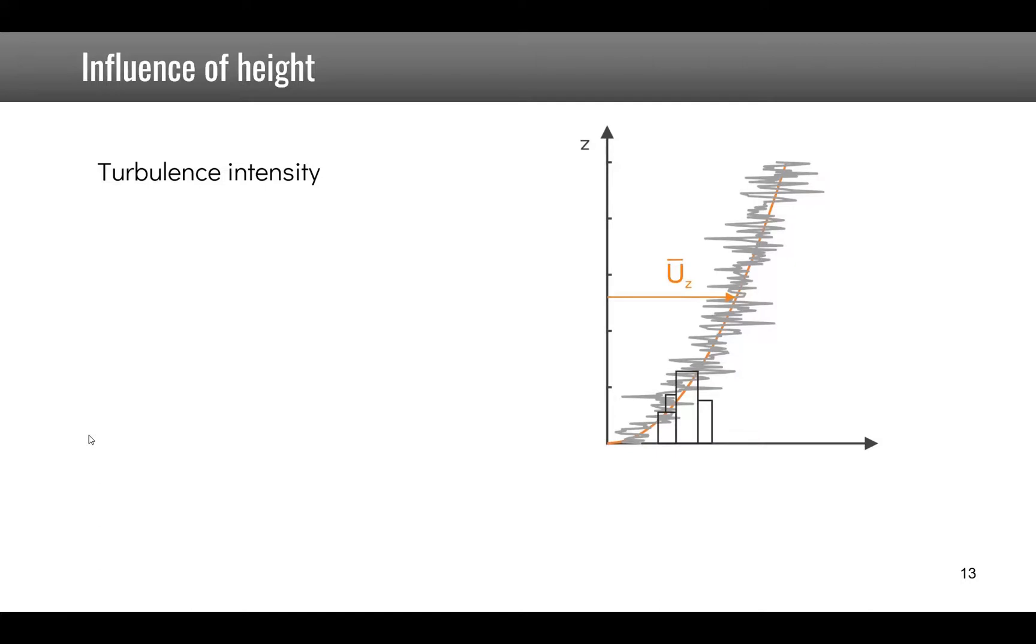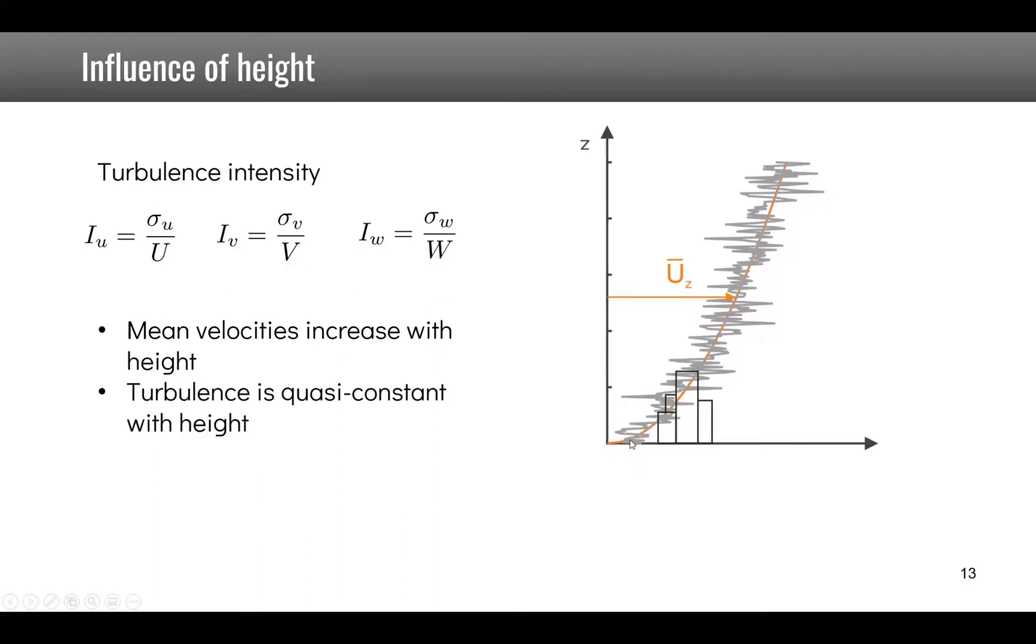Another important parameter to study is the intensity of the turbulence. The intensity is given by the ratio of the standard deviation by the mean. Here U represents the x direction, V the y direction, and W the z direction. As we see on the graph, the mean velocities are increasing with height while the turbulence is getting quite constant with height. This means that the intensity will tend to decrease with height, given by a function of 1 over ln of z over z zero.